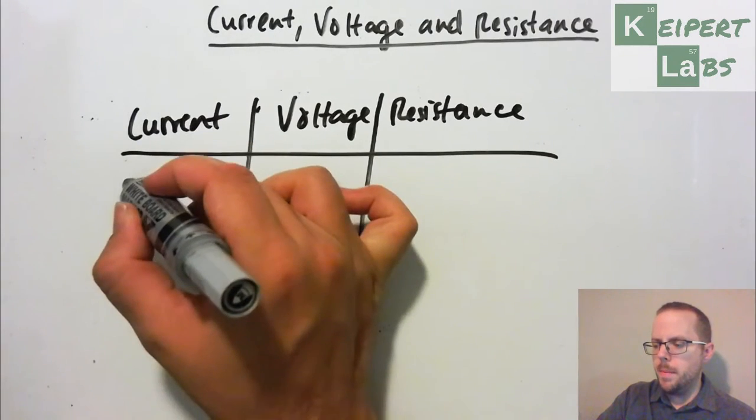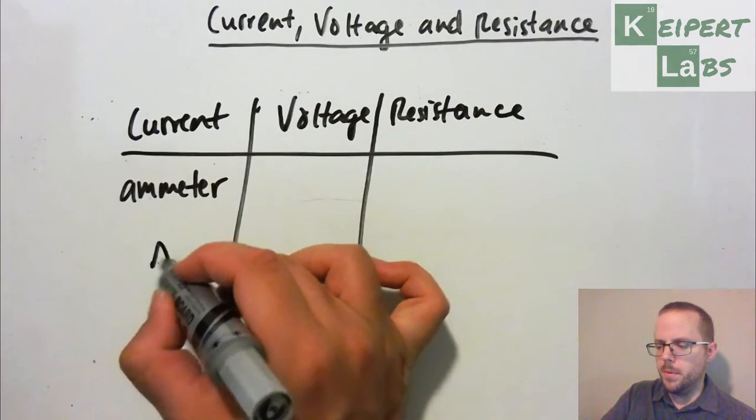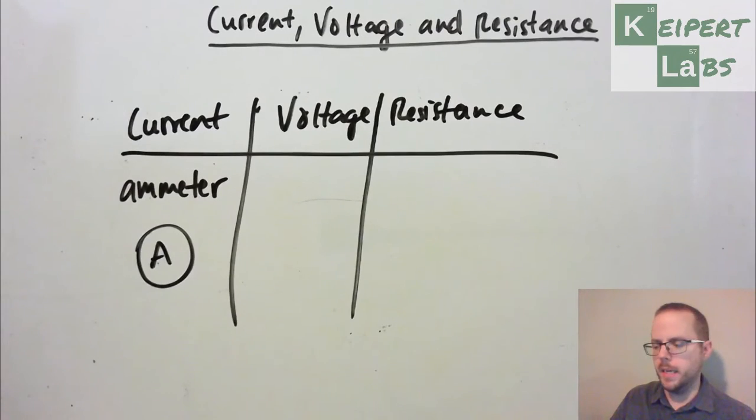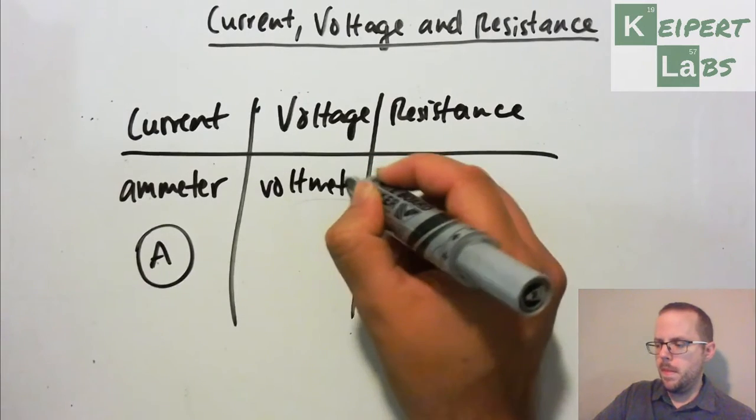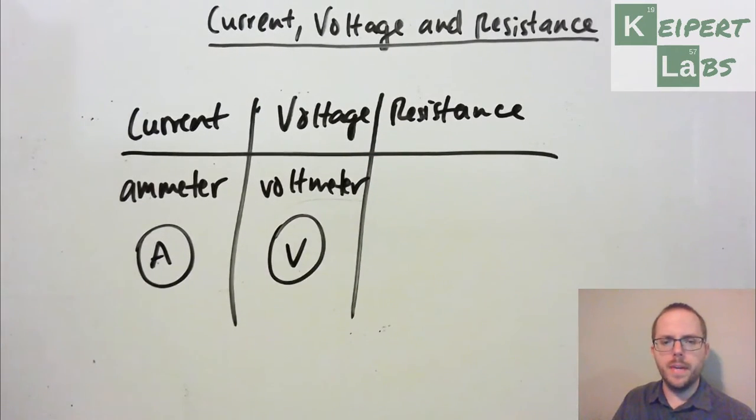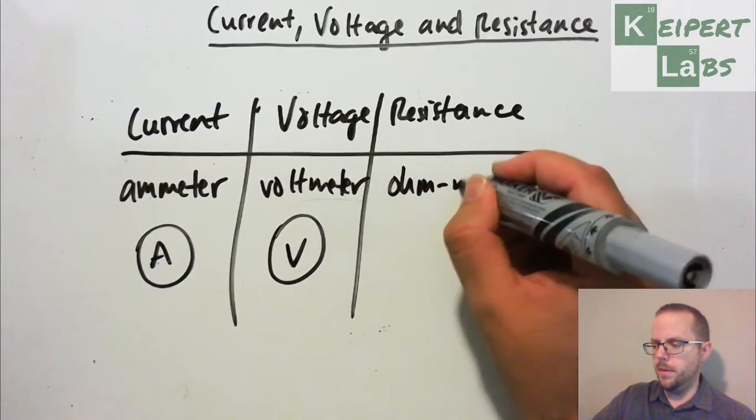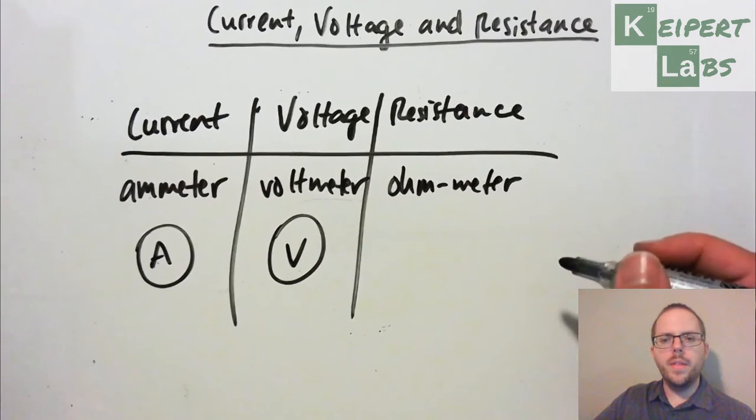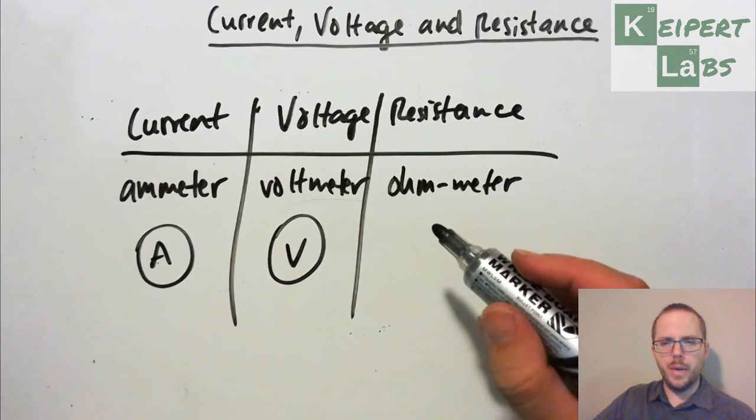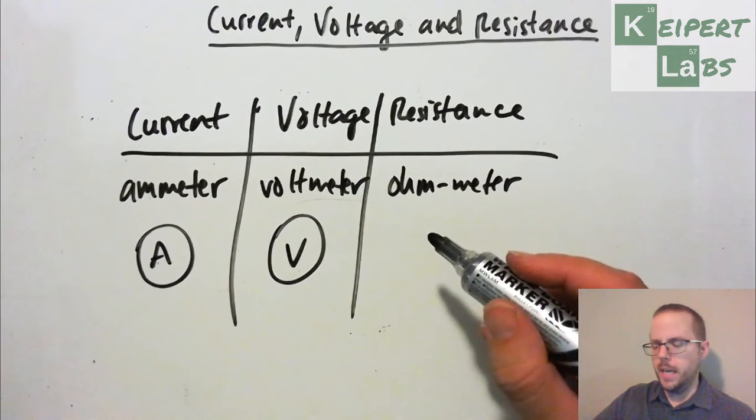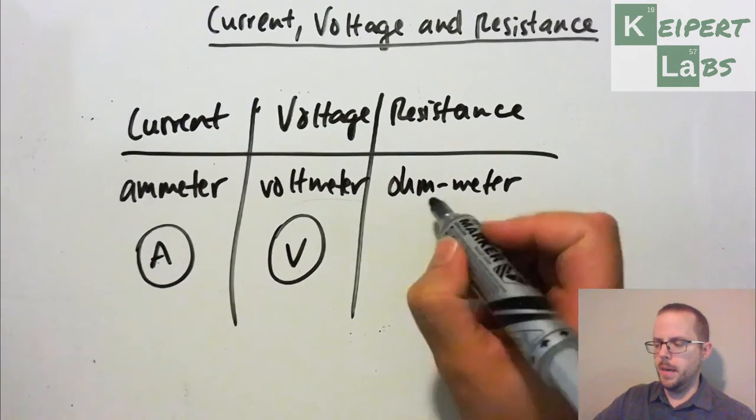So current, it's measured using a device called an ammeter. We give that the symbol of an A in an electrical circuit when we plug it in. Voltage is measured using a device called a voltmeter and it's given a symbol of a V. Now, we don't have, or at least if we have it I don't know it, a symbol for the device we use to measure resistance, which is called an ohmmeter, because normally it's not something that would be directly connected to a circuit. We might use, so think about an ohmmeter.